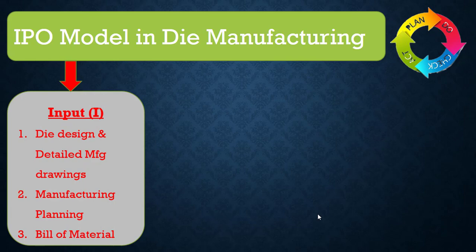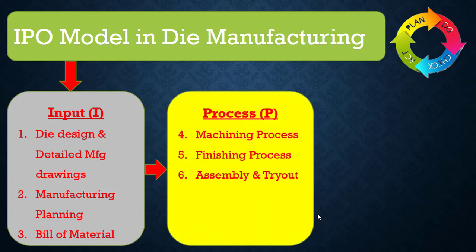In our die manufacturing inputs, I considered: 1. Die design and detail manufacturing drawings. 2. Manufacturing planning. 3. Bill of material. The next stage is the manufacturing process, which includes the machining process, finishing process, and assembly and tryout.